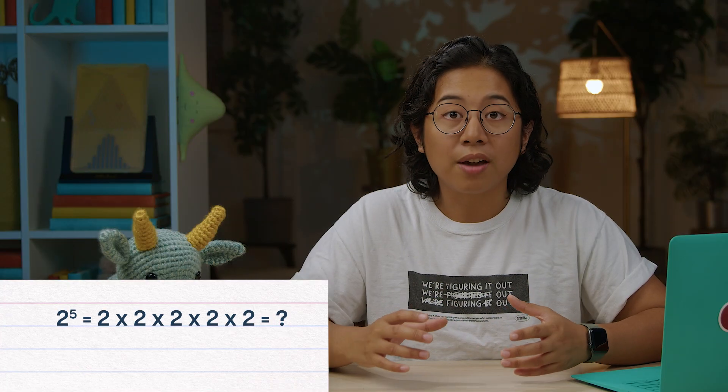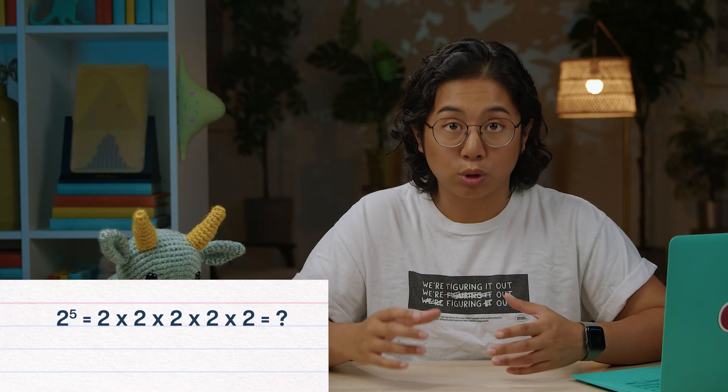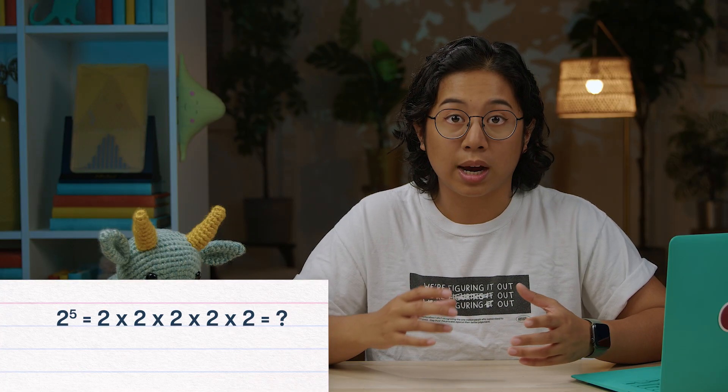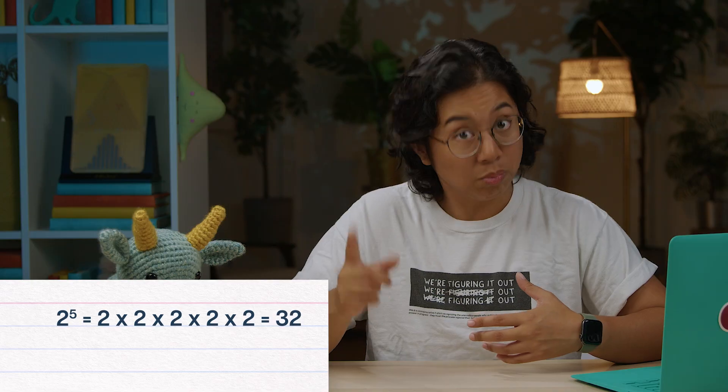For example, 2 to the power of 5 is 2 times 2 times 2 times 2 times 2, which is 32. For the normal distribution, the number being multiplied by itself is Euler's number, which is represented with the letter E.